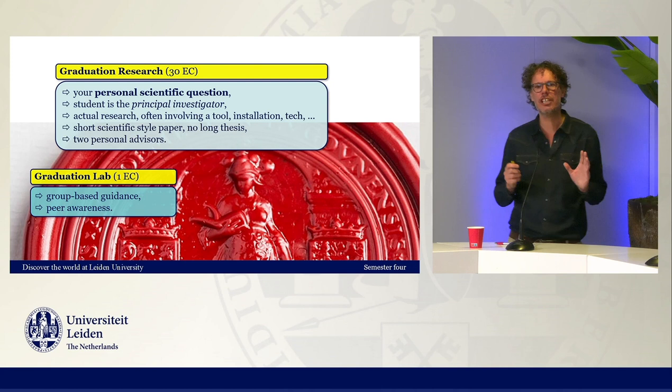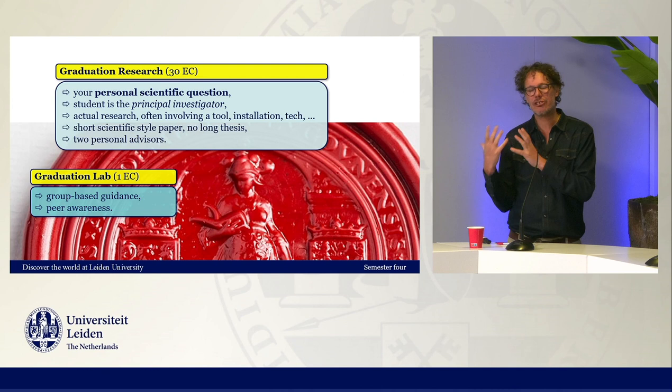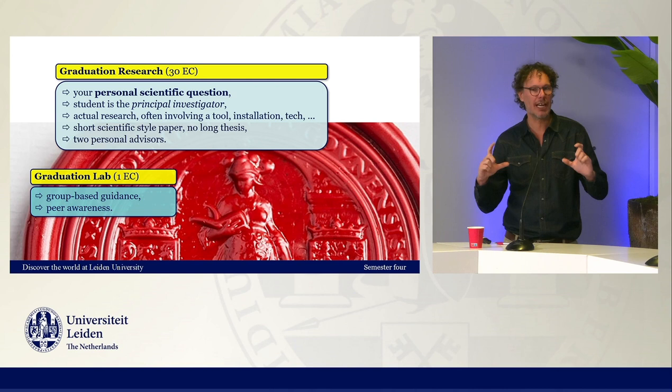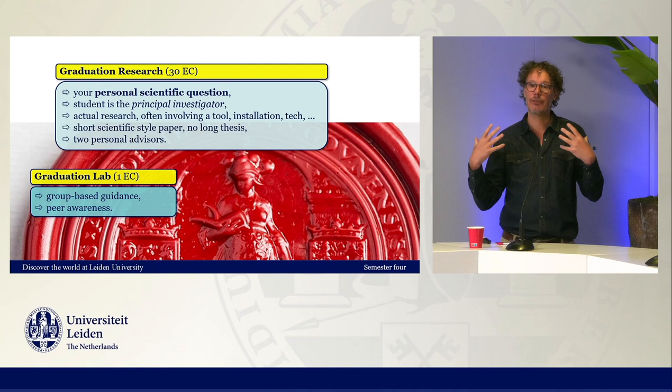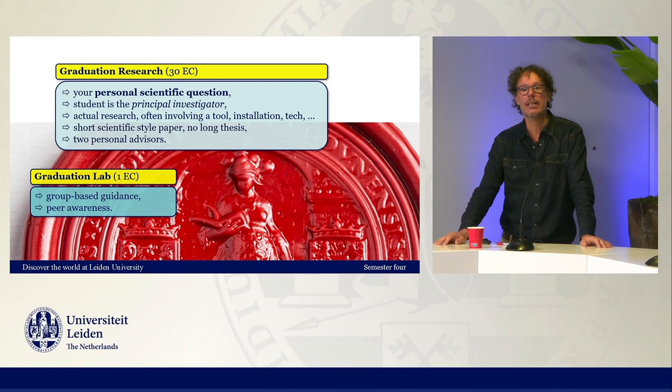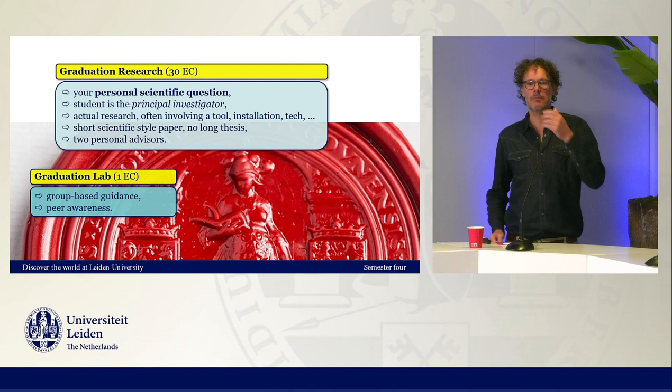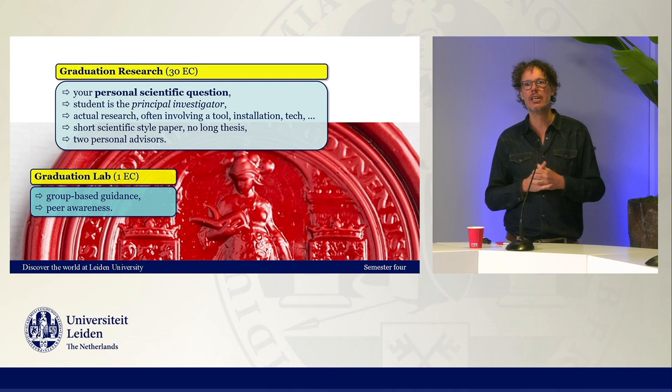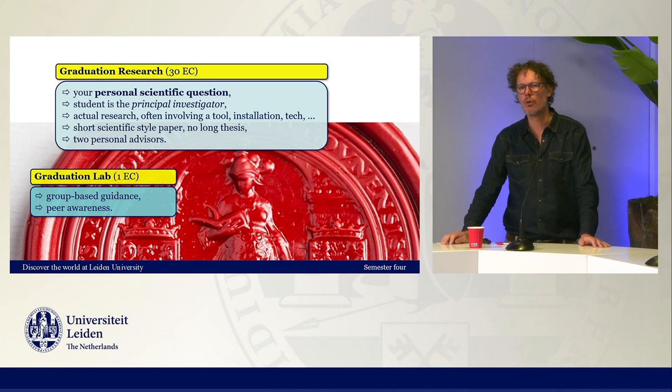This personal graduation research is an actual academic study that every student does. They ask their own personal academic question — a personal scientific question. It doesn't have to be in the natural sciences; it can also be in the field of humanities, philosophy, social sciences, more psychologically related works, or more technology-oriented works. The student is really the boss of their own research. They're helped by two thesis advisors, and it's where the student really chooses what they want to study and what they want to research.